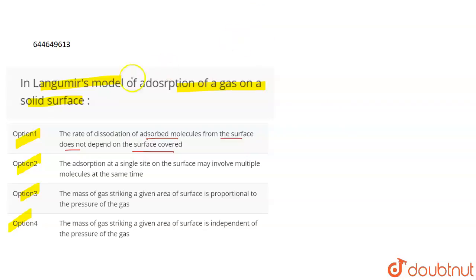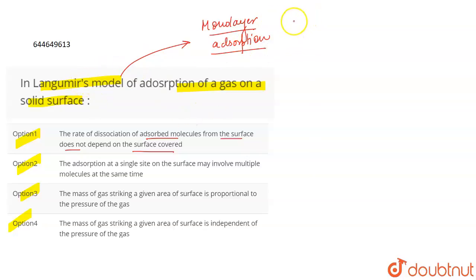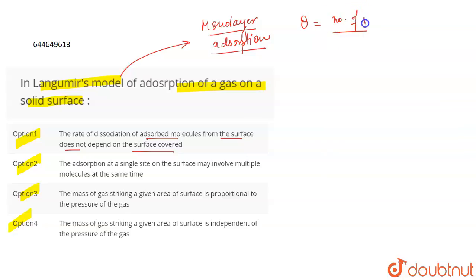In Langmuir's model of adsorption, the first key assumption is that monolayer adsorption takes place — only one layer of adsorption occurs. He defined theta as the fraction of sites occupied, which equals the number of sites occupied divided by the total number of sites available, N. Therefore, N·theta represents the number of sites occupied.